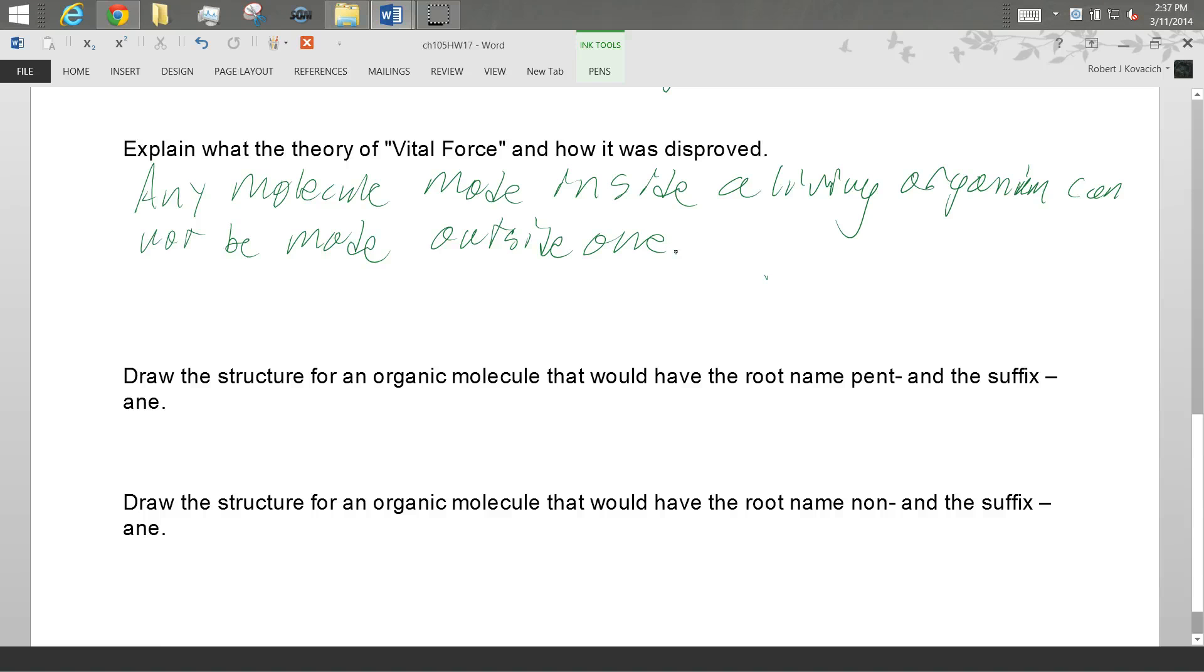And how is it disproved? Urea. Urea was made and identified by Wohler. And then he went on a whirlwind tour, showing everybody that you could make stuff that's made inside of organisms.